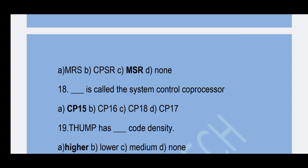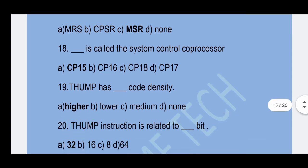19th question: THUMB has higher code density. Option A — Higher is the correct answer.